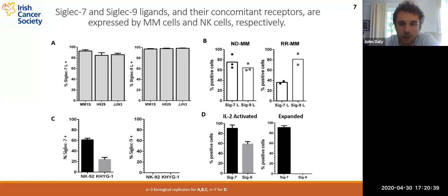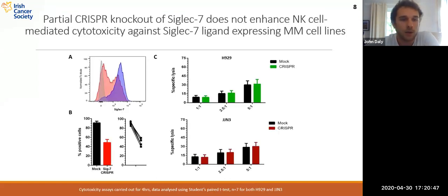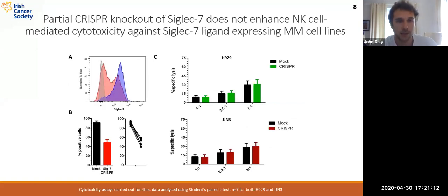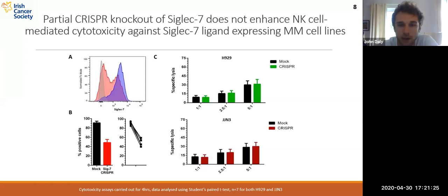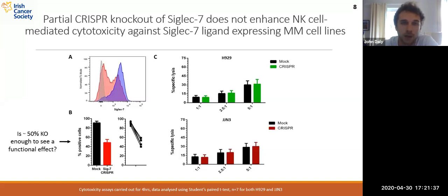We decided to target the NK cells for Siglec-7 using CRISPR, as this was one of the most relevant avenues for investigation. Using a single guide, we obtained an approximately 50% level of knockout. In the histogram, you can see a representative donor — one of seven total — with a clear negative population forming in the CRISPR-edited cells in red, versus the mock electroporated cells which remain highly positive in blue. This approximately 50% knockout was consistent across all seven donors. However, when we cultured these knockout cells against myeloma cell lines H929 and JGN3, which do express Siglec-7 ligands, we did not observe any increases in killing. We suspected that 50% knockout was not a high enough level to see a functional change in the NK cells.